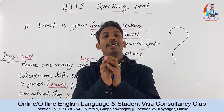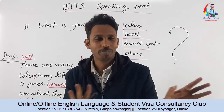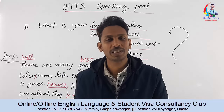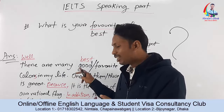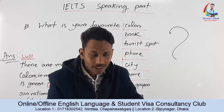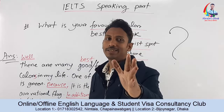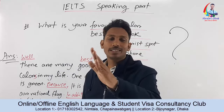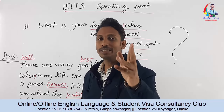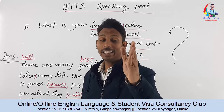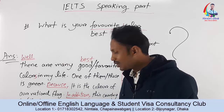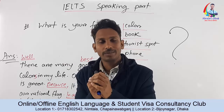If you answer this way — with 'Well,' 'one of them,' 'because,' and 'in addition' — you can get around 6.5. If your expression and fluency are also good, you can reach 7, 7.5, or even 8. With a very well-prepared and fluent delivery, 9 is also achievable.